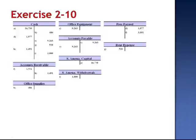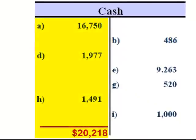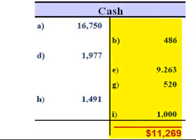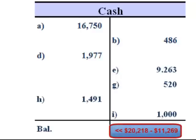Here are the T-Accounts from Exercise 9. When we look at the Cash T-Account, to calculate the ending balance, we total up the debits — $20,218 in debits. We then total the credits — $11,269 in credits — and net the two together, giving a net debit balance of $8,949.